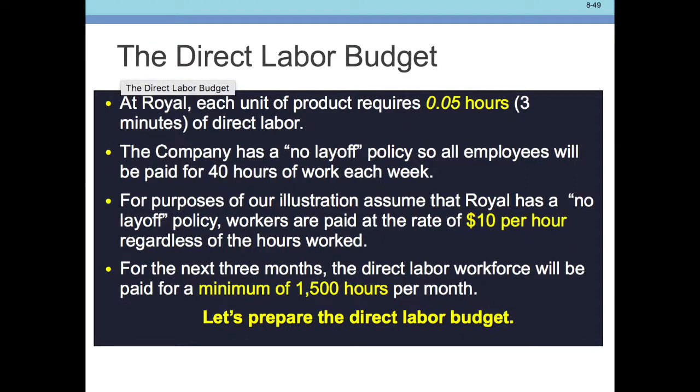Let's look at our choices here. At Royal, each unit of product requires .05 hours or 3 minutes of direct labor. One thing to be cautious of is when a problem says a percentage of hours — remember there are 60 minutes in an hour, not 100. So .05 is not 5 minutes; it's 3 minutes, or .05 of an hour.